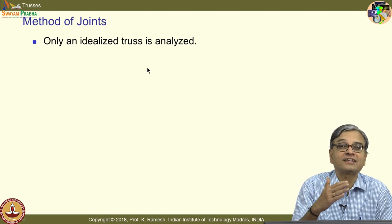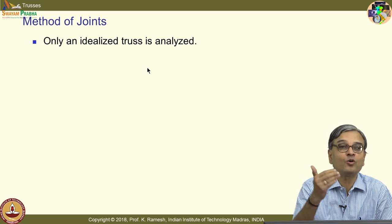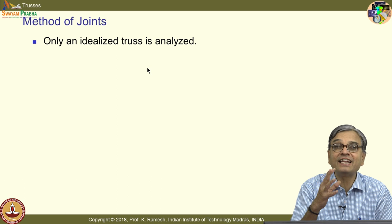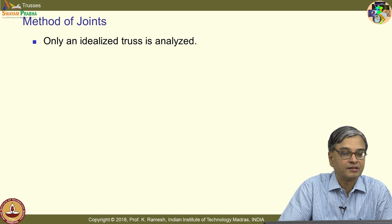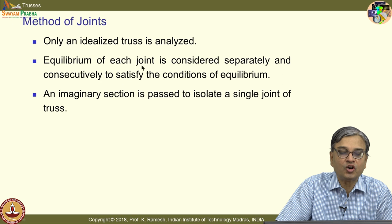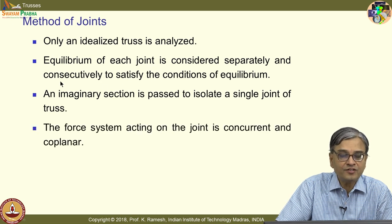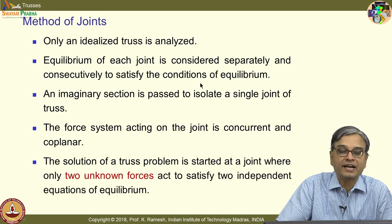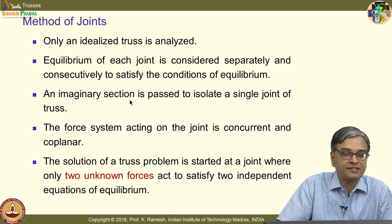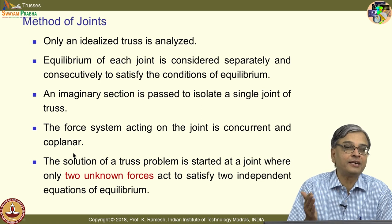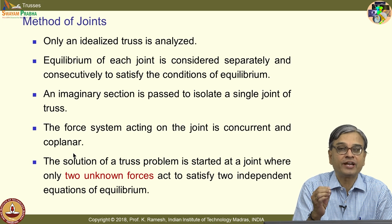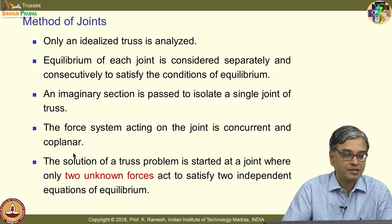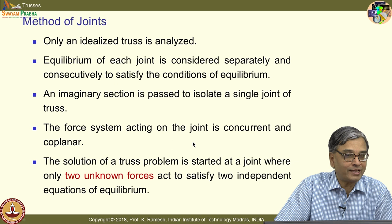A joint has a gusset plate where several members join. You may have riveted, bolted, or welded connections. But we idealize the joint to behave like a pin joint. Equilibrium of each joint is considered separately and consecutively to satisfy the conditions of equilibrium. The idea is where to start and how to navigate through the truss. You pass an imaginary section to isolate a single joint, and since the force system is concurrent and coplanar, you can write only two independent equations. You must select a joint where you have at most two unknowns at a time.